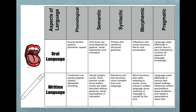Now pause here and reflect on this image. You have the five aspects of language at the top — phonological, semantic, syntactic, morphemic, and pragmatic — and you can see how they're represented through oral language and written language. Pause this and reflect: how does oral and written language progress the same, and how do they look differently? Put that in your notebook. When you are finished reflecting on this image, you are finished with lecture one.